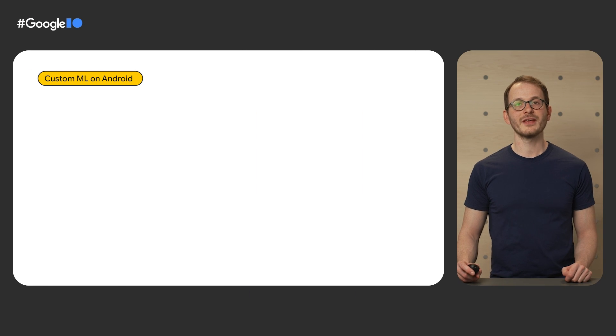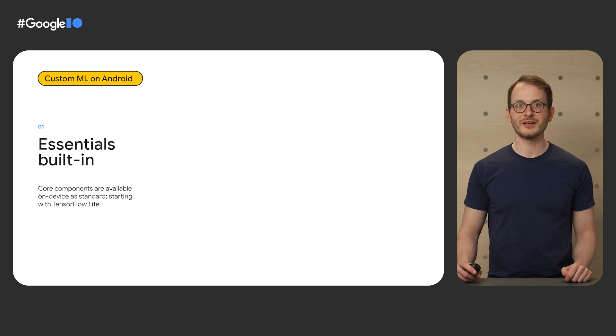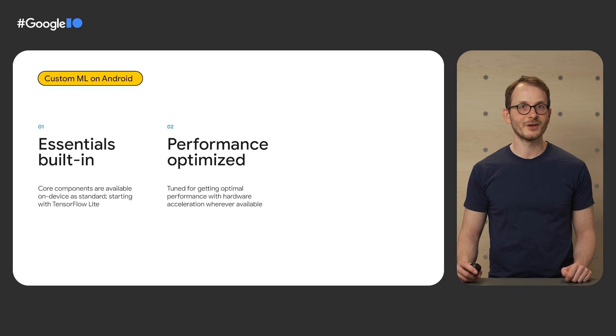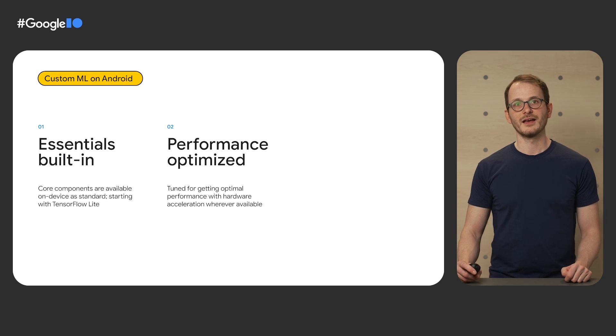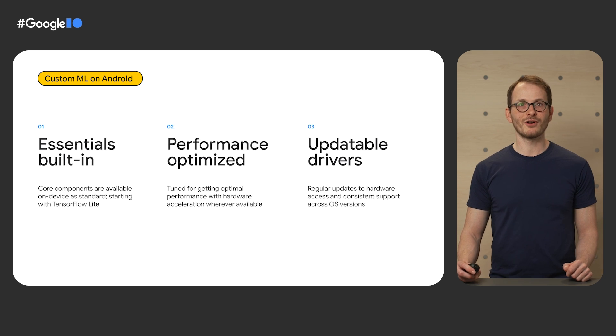Hi, I'm Ali, a product manager in Android. I'm going to talk about Android's custom ML stack, which consists of a set of supporting components that make deploying custom ML easier. As a recap, last year we highlighted three areas where Android's custom ML stack would deliver significant improvements. First, making essential components for running on-device inference built in, so that you don't need to bundle them into your app separately, starting with TensorFlow Lite. Second, helping you get optimal performance across the ecosystem by using hardware acceleration wherever available. And third, providing regular updates to hardware drivers outside of Android dessert releases with consistent support across OS versions. I'm proud to say that we made great progress in all of these areas.